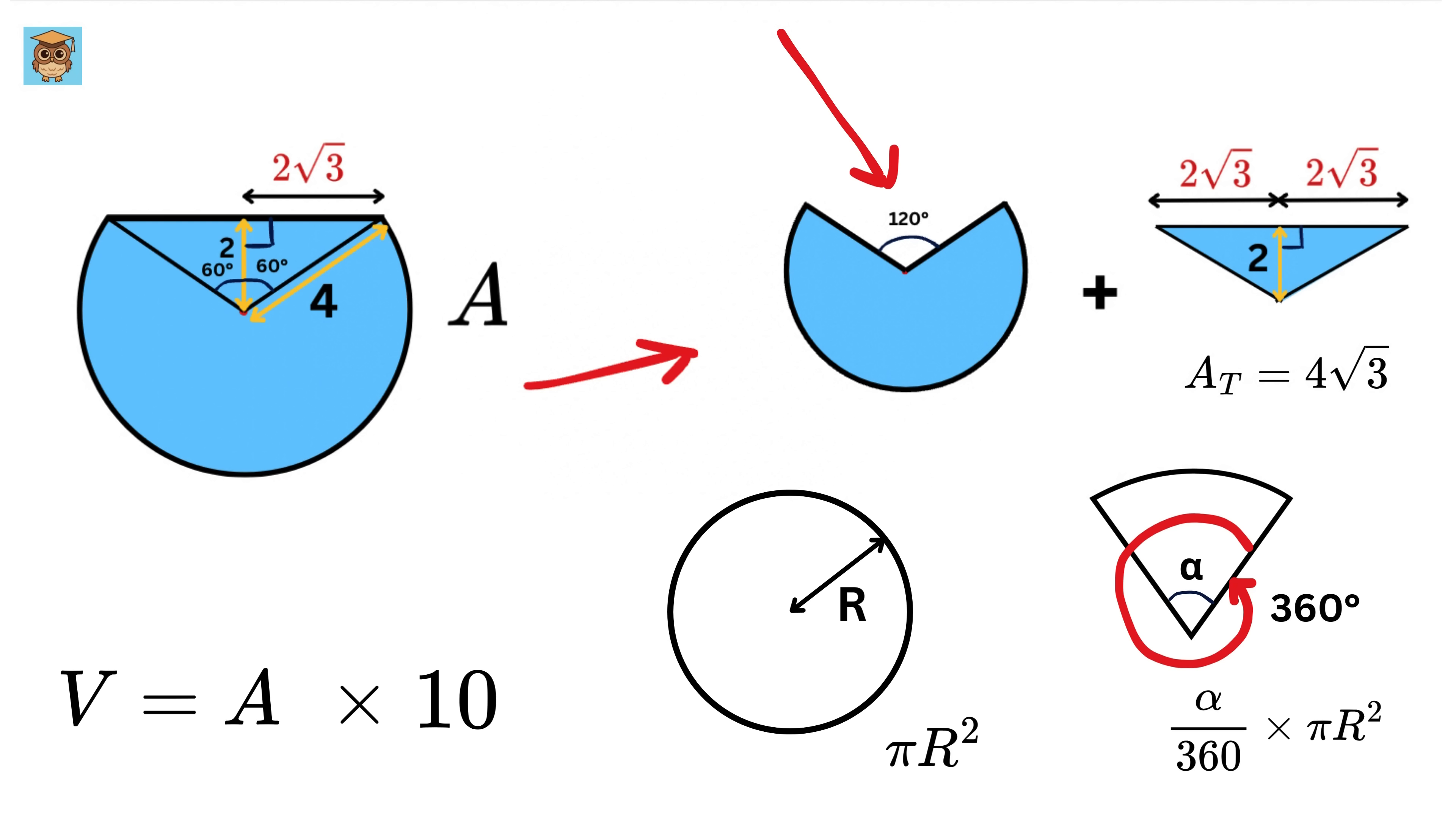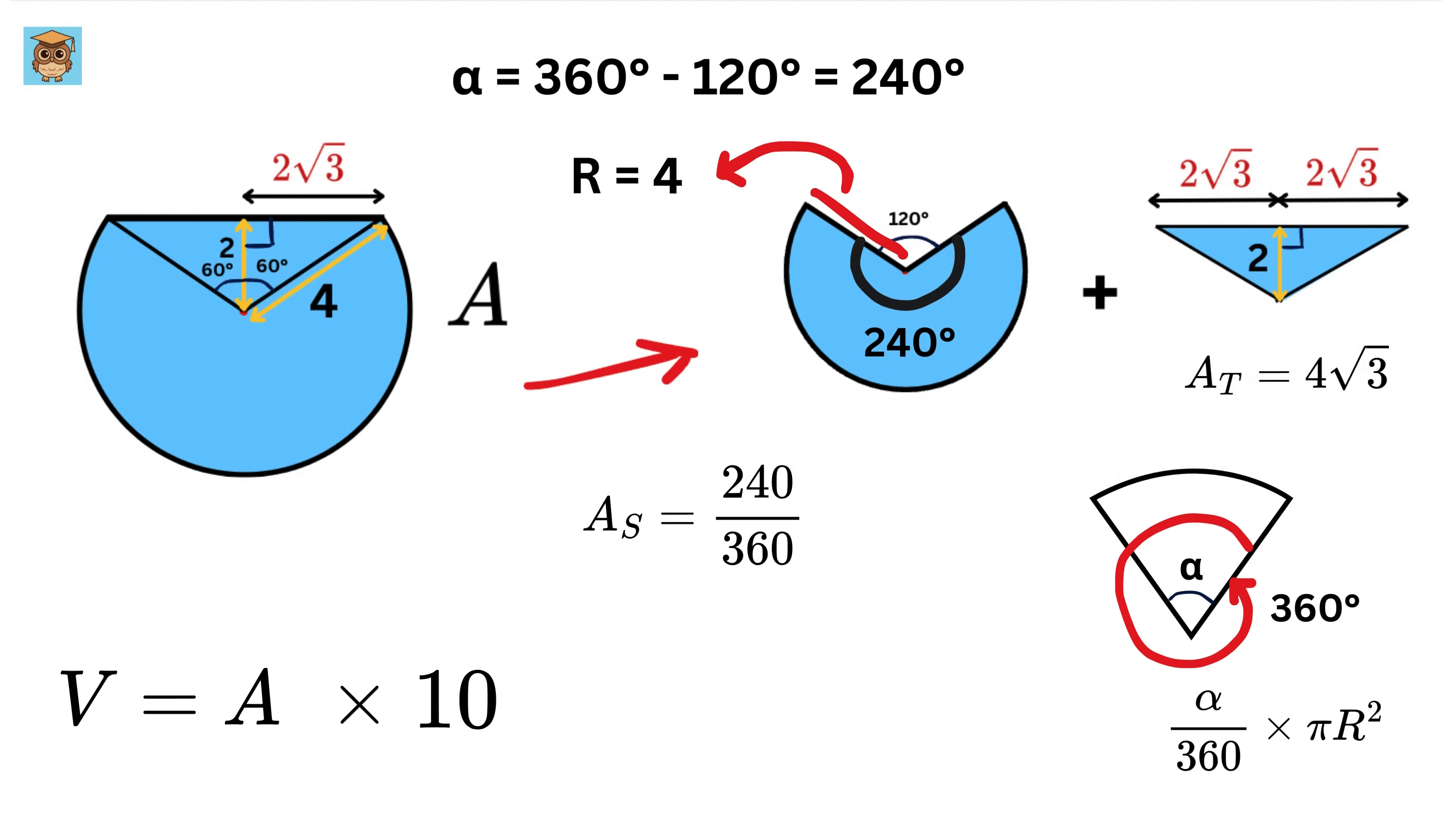Now consider this segment of the circle. What will be its alpha or this angle? This is 120 degrees and the full angle is 360 degrees. So alpha will be 360 minus 120 or 240 degrees. And R, or this radius, is 4 meters. So the area of this segment will be 240 over 360 times pi times 4 square or 16 pi times 2 over 3 or 32 pi over 3 meter square.